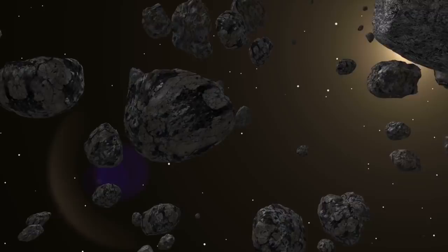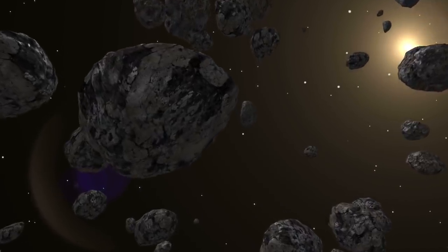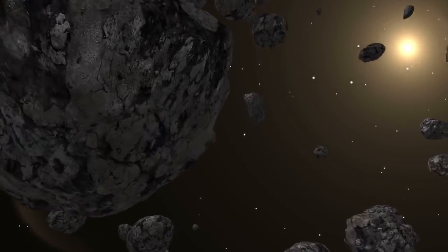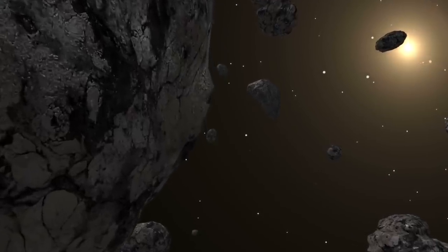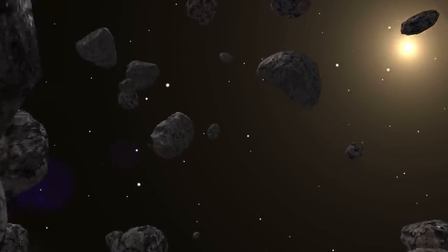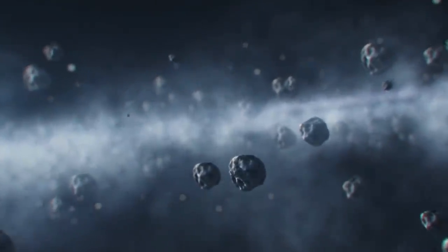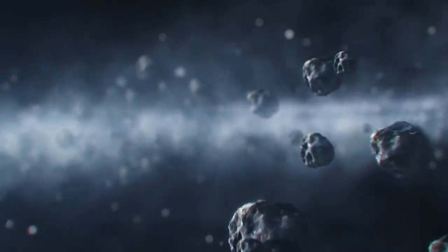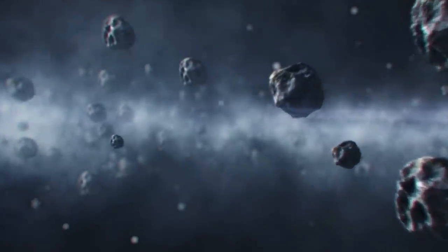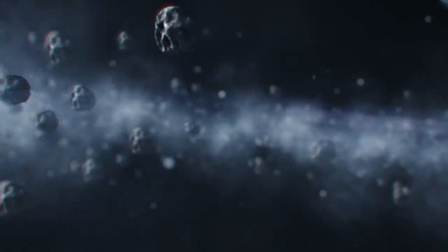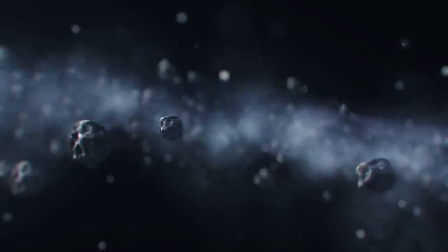NASA are constantly scanning the skies for near-earth objects. These are small celestial bodies such as asteroids that could cause harm to our planet. One of these that's recently made the news is that of 2002 PZ-39. NASA confirmed this asteroid did come close to our planet, further saying that it was travelling at 34,000 miles per hour.